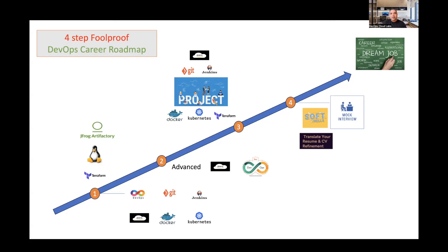Last but not least is to work on soft skills. Getting a job is not just a matter of technology — you need to focus on the way you speak, give mock interviews so you are prepared, and have your CV refined so it's very polished. Remember, your CV is the face you present to your interviewer; that's how you get called, so it has to be immaculate. LinkedIn is also another channel through which candidates get different types of calls, so it's important to have your LinkedIn profile refined.